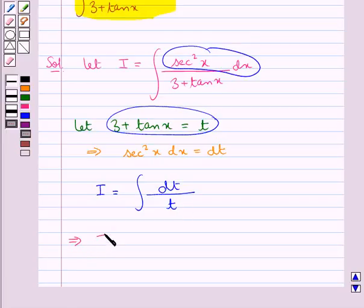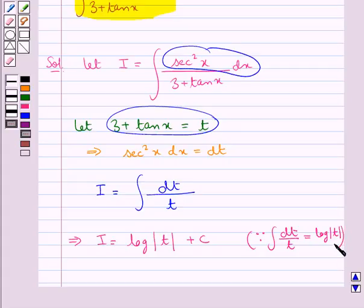This means I equals log|t| + C, since the integral of dt over t equals log of modulus t, and C is the constant of integration.